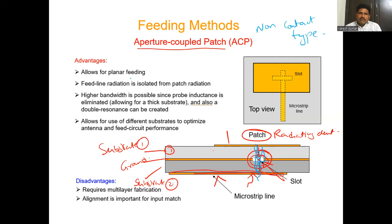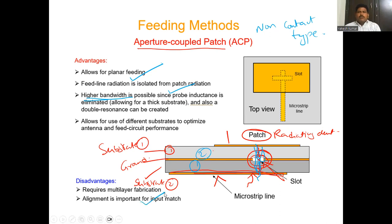The advantages of aperture coupled feed are: it allows planar feeding and feed line radiation is isolated from patch radiation; it produces higher bandwidth; it allows use of different substrates to optimize antenna and circuit performance; and it produces low spurious radiation. The disadvantages are that two substrates are required, so multi-layer fabrication is needed and alignment is important for input impedance matching.